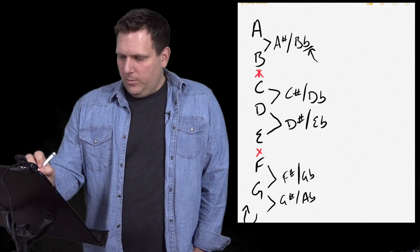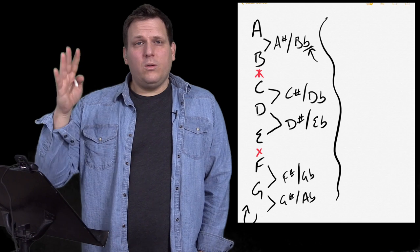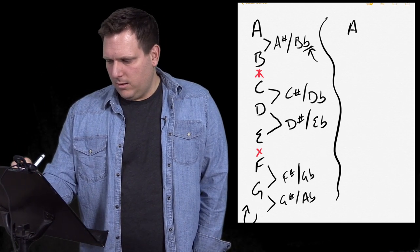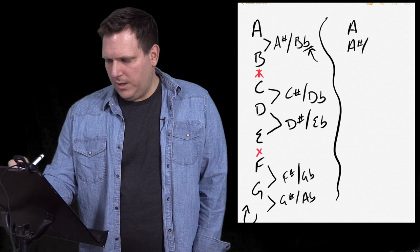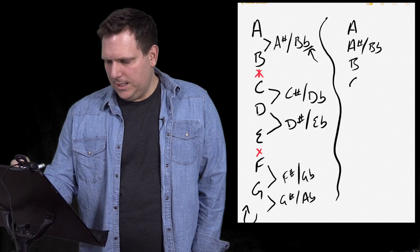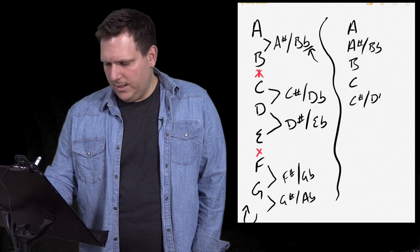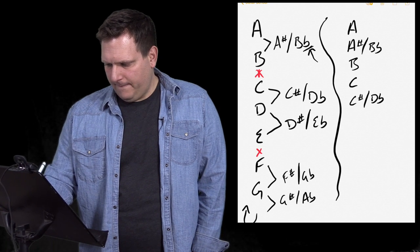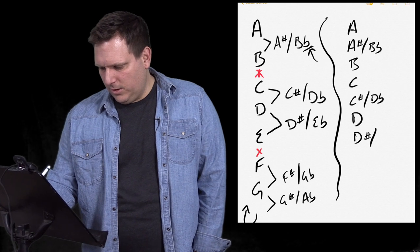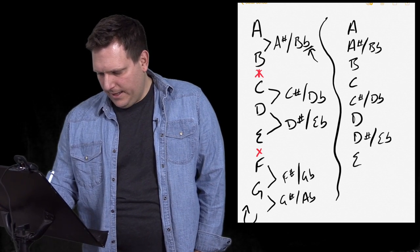So really, if we break this down, the full musical alphabet is A, A sharp or B flat, B, C, C sharp or D flat, D, D sharp or E flat, E, F.